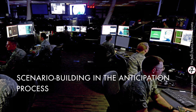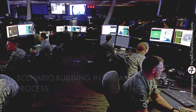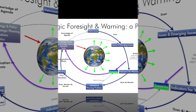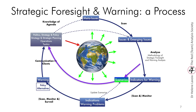Let's now turn to the process of scenario building within the whole anticipation process. This is how I summarized the strategic foresight and warning process in a diagram, and I'll let you listen to how I described it in the first course. You start with what is a given, something that you don't decide. If you are within a state or an administration, this is the politics, strategy, and policy created by your policymakers. If you are in a company, it will usually be the strategy or decision of your CEO.